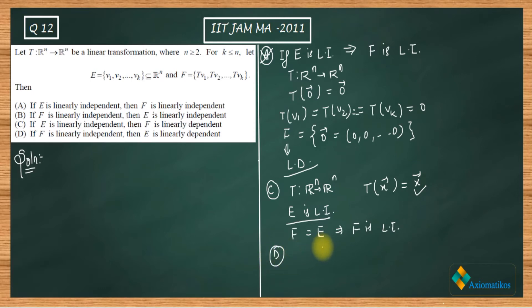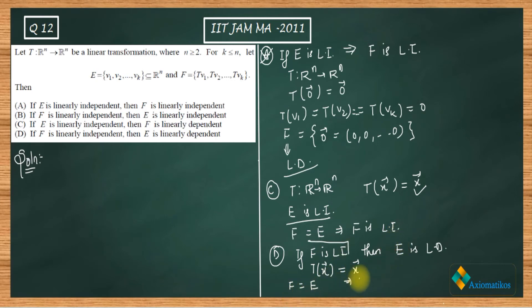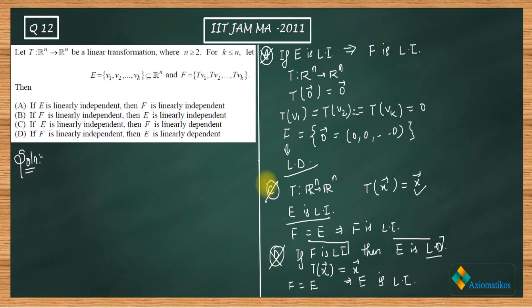Option D says: if F is linearly independent, then E is linearly dependent. Again, choose the identity transformation. Since F and E are the same under the identity transformation, if F is linearly independent then E must also be linearly independent — not dependent. So option D is also incorrect.